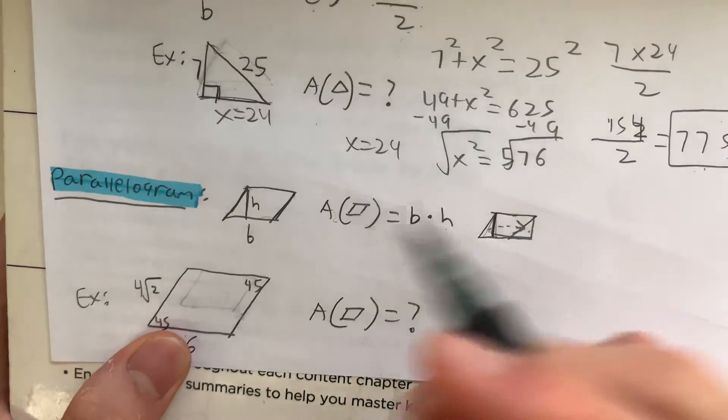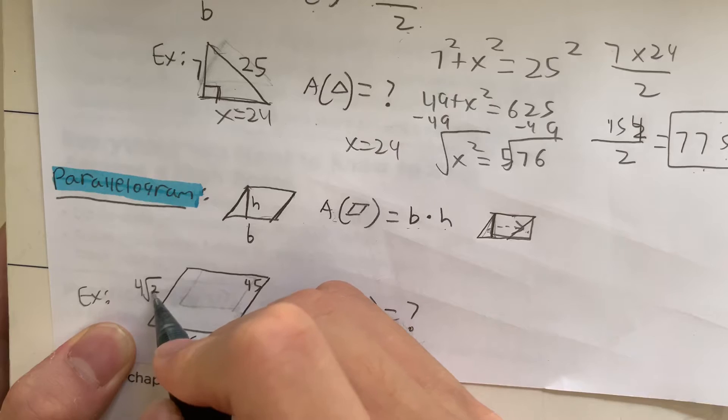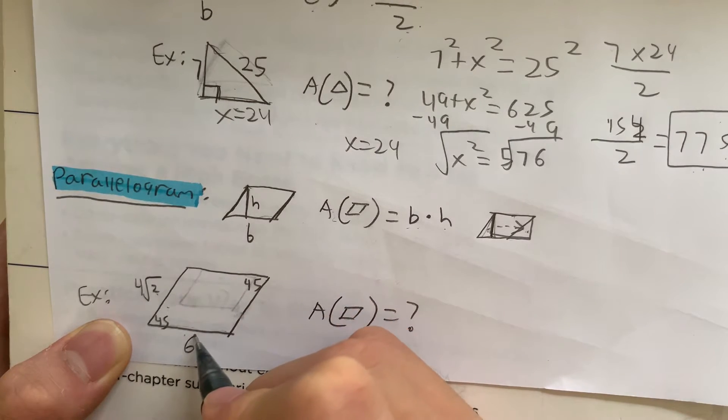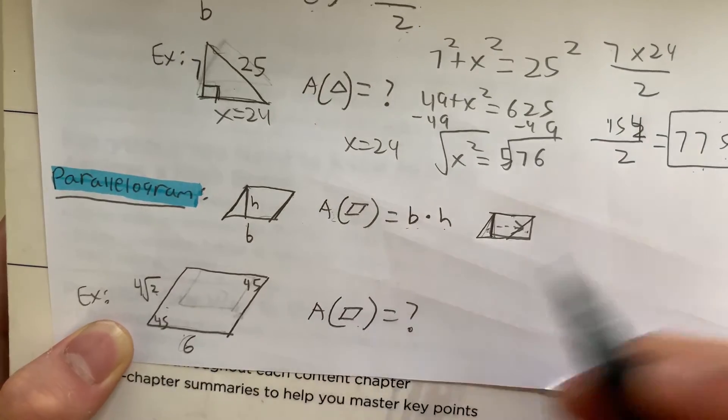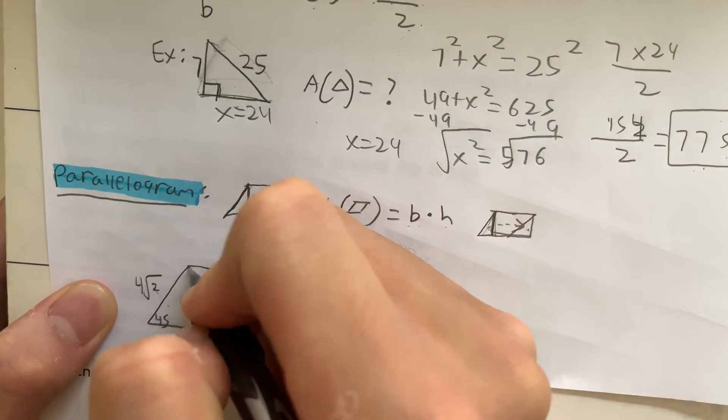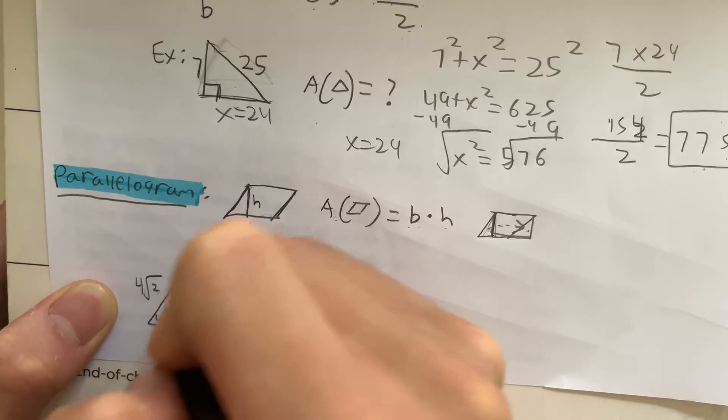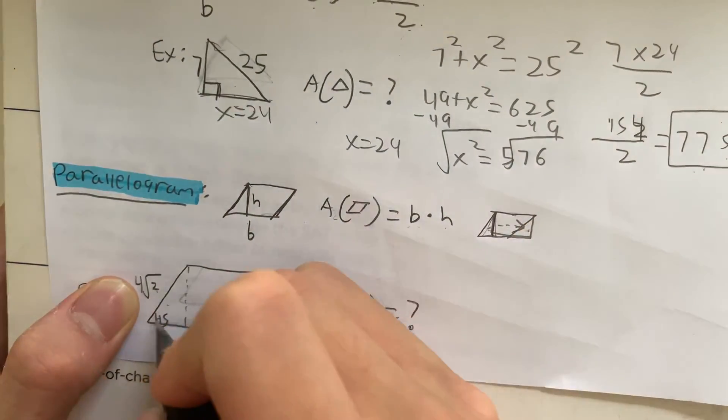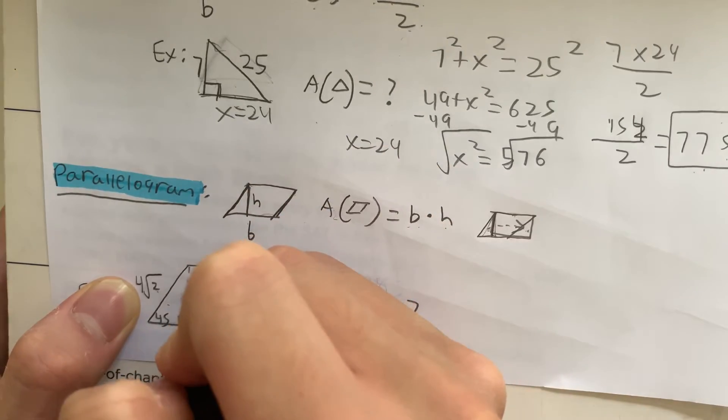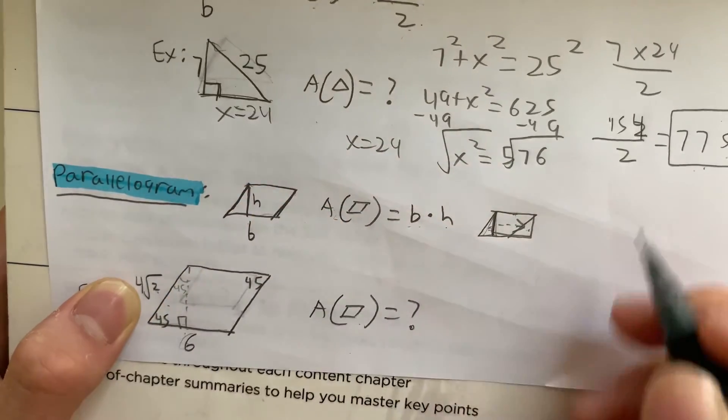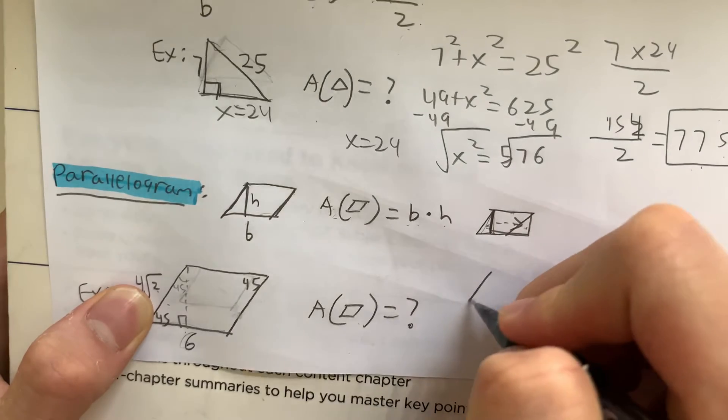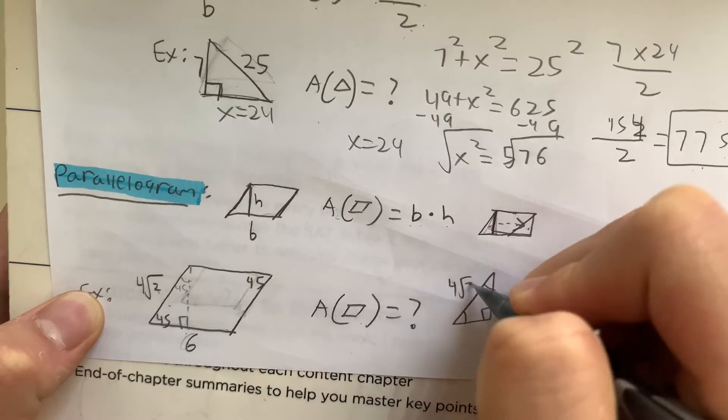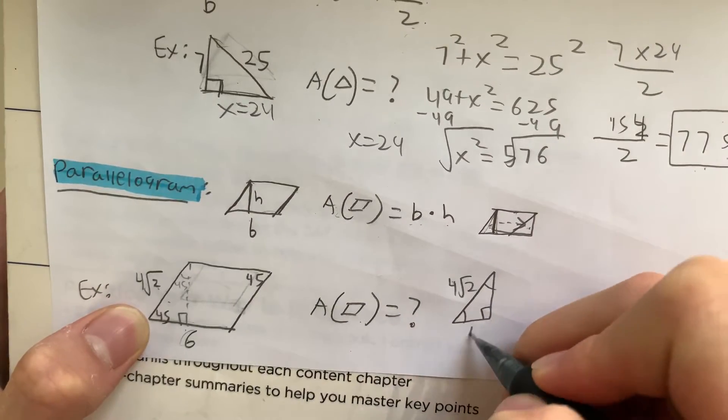So let's check this out. In our example, this side equals 4 root 2, and our base equals 6. They're asking for the area. So what you do is split along here and create a 45-45-90 triangle. How do I know it's 45-45-90? It's because this is 90, meaning this is also 45. So let's draw the triangle. 45-45-90. We have 4 root 2, so what's the side length of this? 4.